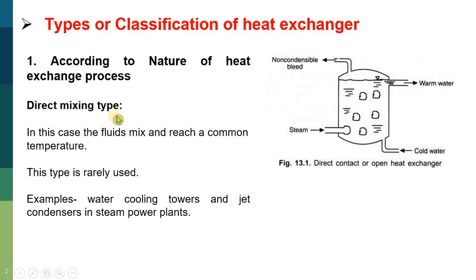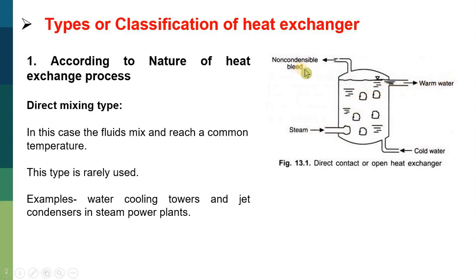Number one is called the direct mixing type. In this type of heat exchanger, fluids mix and reach a common temperature. In this diagram we observe a direct contact or open heat exchanger in which steam from a steam power plant is directly mixed with cold water. When the two fluids mix, they attain an equilibrium or common temperature. After this process the steam is converted into warm water, and any non-condensable gases are taken out in the other direction. This type of heat exchanger is rarely used. Examples are water cooling towers and jet condensers in steam power plants.